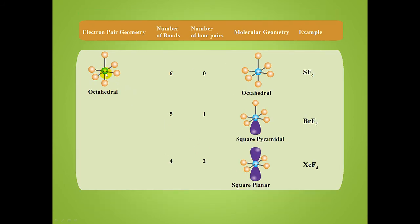The last electron pair geometry we need to look at is octahedral — where we have a central atom bonded to six atoms, or a central atom with six charge clouds. If those charge clouds are all bonds, the molecular geometry is also octahedral. With five bonds and one lone pair, we have a square pyramidal molecular geometry. And with four bonds and two lone pairs, we have a square planar geometry.